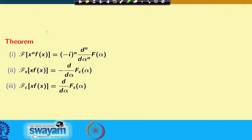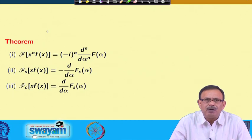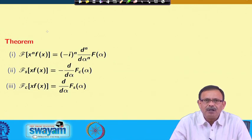The first property is: Fourier transform of x^n · f(x) equals (-i)^n · d^n/dα^n of F(α). Similarly, Fourier sine transform of x·f(x) equals minus d/dα of Fourier cosine transform of α. And Fourier cosine transform of x·f(x) equals d/dα of Fourier sine transform of α.